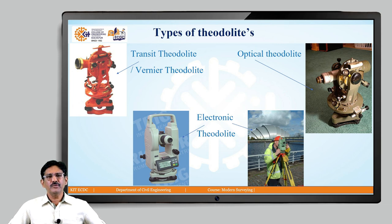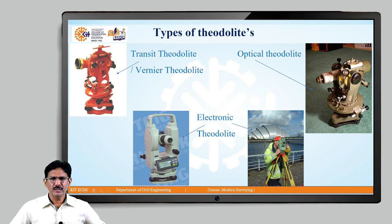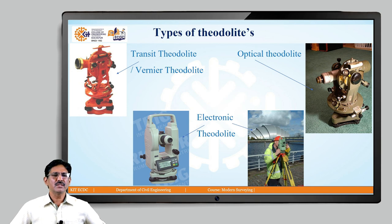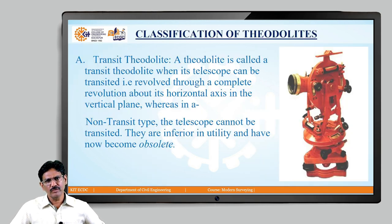The types of theodolite include: the standard conventional vernier theodolite, also called the transit theodolite; earlier vertical optical theodolites, which used a mirror for angular measurements; and the latest electronic theodolite, which has a digital screen for angular measurements. With the electronic theodolite, you do not have to measure the angle on a graduated ring as in the conventional theodolite.